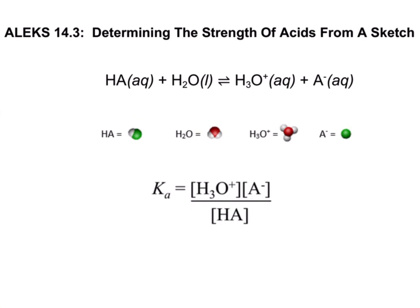We're also going to relate this to the equilibrium constant expression for KA. Remember that KA equals the concentration of H3O plus times the concentration of A minus over the concentration of HA.